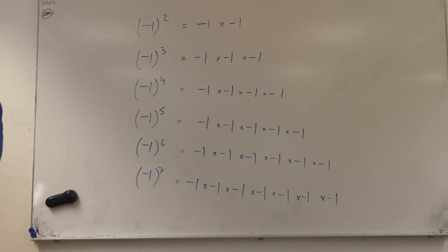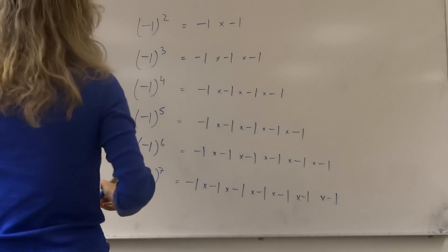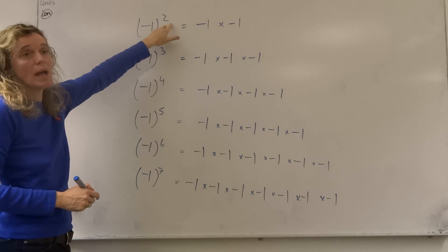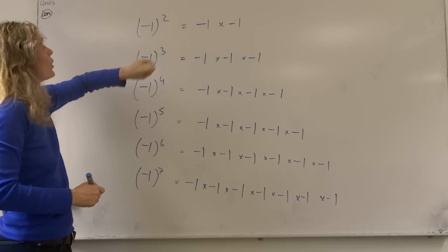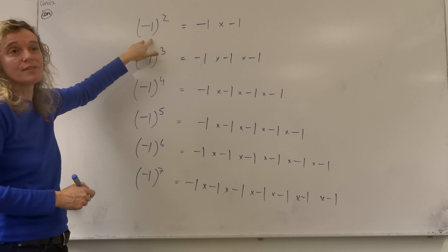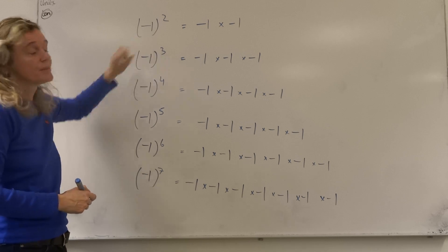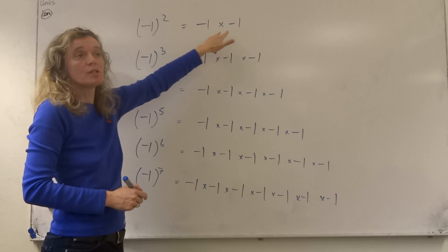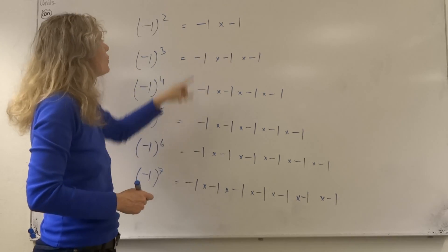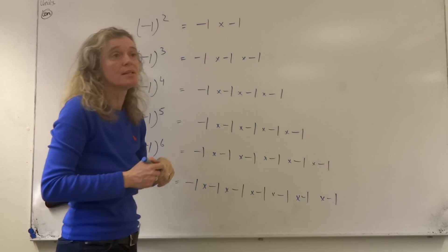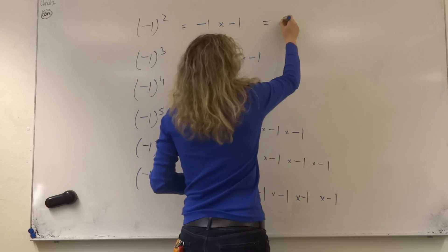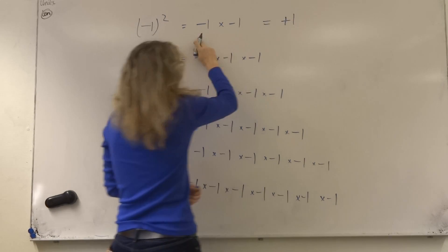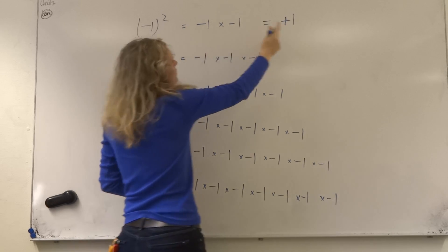This one combines the technology or the maths of understanding how exponentials work combined with understanding how negative numbers work. We know that minus one squared means minus one multiplied by itself twice, but we also know that a minus times a minus is a plus, so minus one times minus one will give us a plus answer of one.